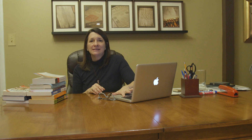Since 1986, two researchers, Gough and Tunmer, came up with the simple view of reading. It's a formula for what's needed for reading comprehension. Simply put, if you can't decode — and by decoding they meant reading words outside of context — if you can't get the words off a page, there's not going to be any reading comprehension.